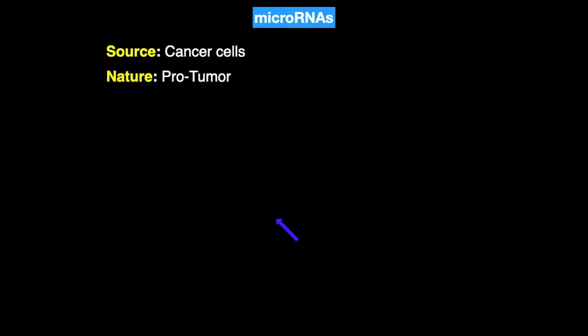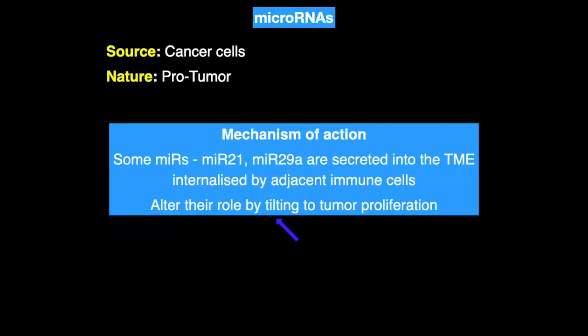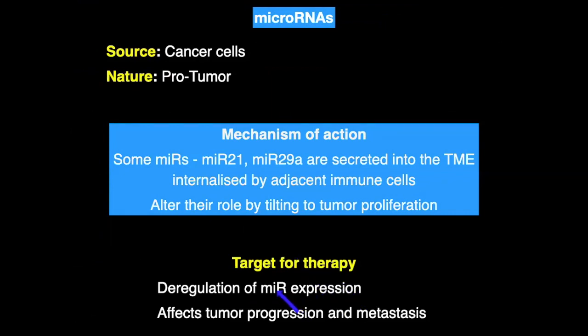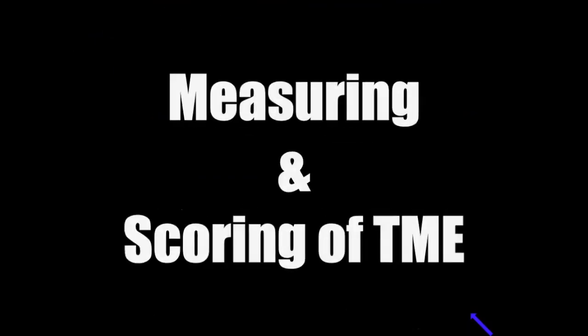MicroRNAs are pro-tumor agents secreted by cancer cells. Some microRNAs like miR-21 and miR-29a are secreted into the microenvironment, internalized by adjacent immune cells, and this leads to alteration in their role by tilting toward tumor proliferation. Deregulation of microRNA expression can be used as a therapy, affecting tumor progression and metastasis. So please remember: there are four major headings under which there are 16 components, and we have to know the nature, source, mechanism of action, and target for therapy for each.